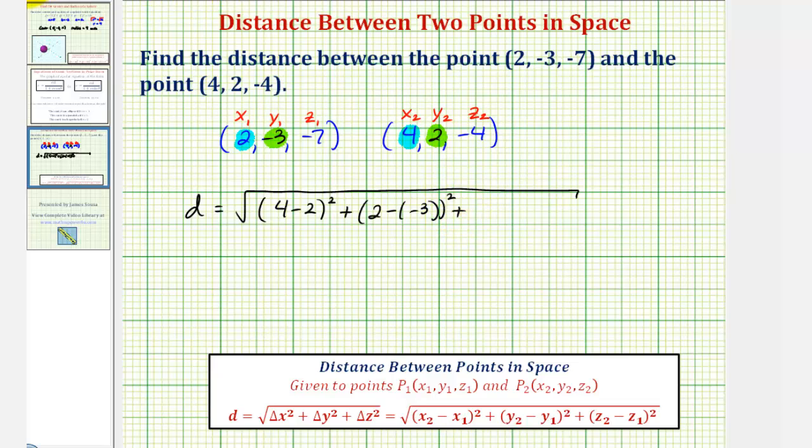plus we finally have (z₂ - z₁)². So we'd have (-4 - (-7))².